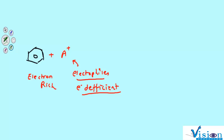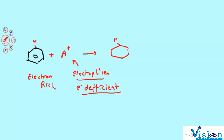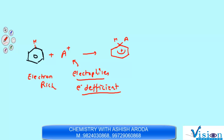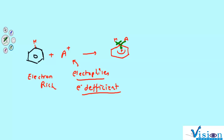Electrophiles may be cations or neutral species, but they are electron-deficient. They attack electron-rich benzene. As we know, there are six hydrogen atoms on benzene. For a fraction of a second, the electrophile attacks, and then the hydrogen atom leaves, completing the benzene ring.